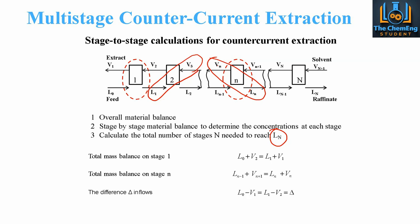The difference in flows is denoted by delta: delta = L0 − V1 = L1 − V2, and so on. This is very important when modelling our multi-stage graphs. Delta is a flow rate in kilograms per hour and is constant for all stages. Once we know it for one stage, we assume steady state and that delta is consistent throughout.